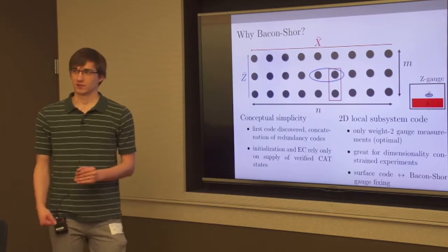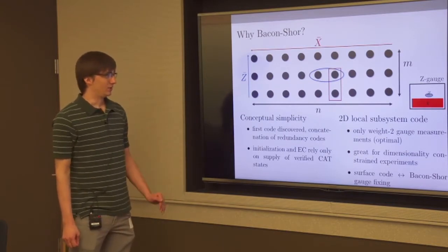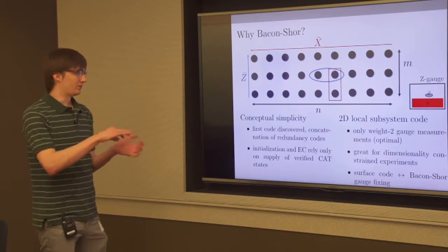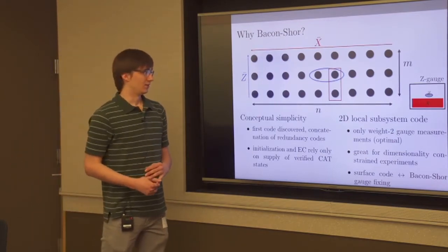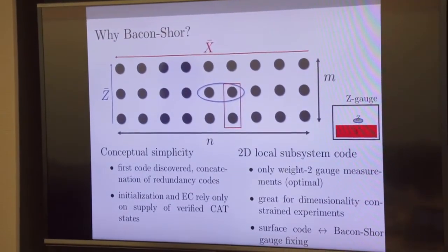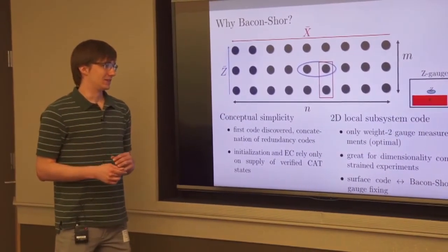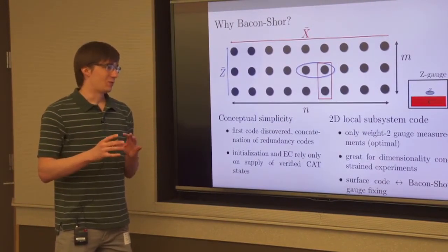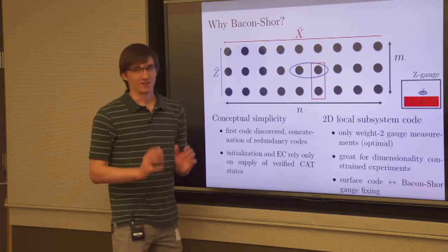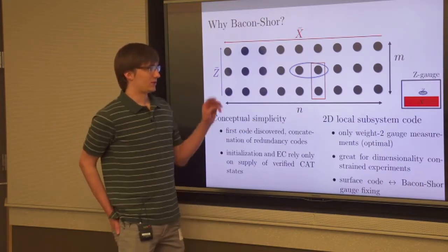Bacon-Shor codes are a concatenation of classical redundancy codes. Along with that conceptual simplicity comes a very easy way to prepare the code states, because their code states are essentially just cat states. If you can prepare and verify cat states against errors, you can make Bacon-Shor code states. So this is essentially fault-tolerant computing with just a big batch of cat states — and it does universal computation with just cat states. It's a 2D subsystem code, which is important for implementation.